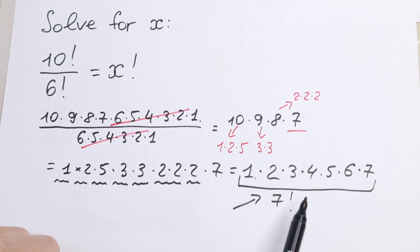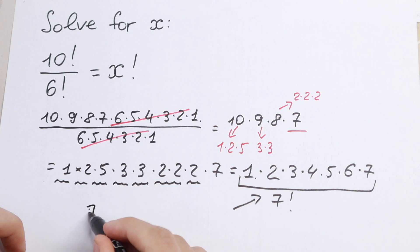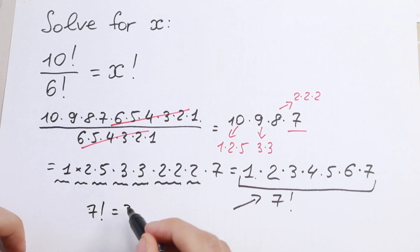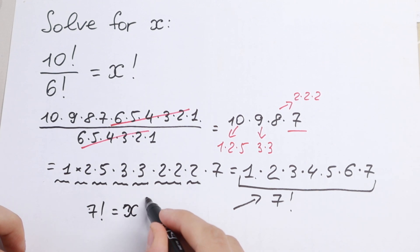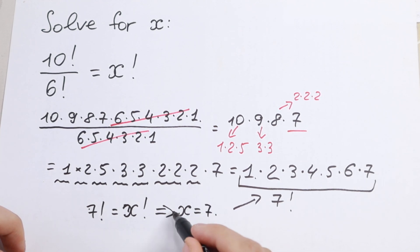Let's plug this back into our equation. We have 7 factorial equal to x factorial, and from here x is equal to 7.